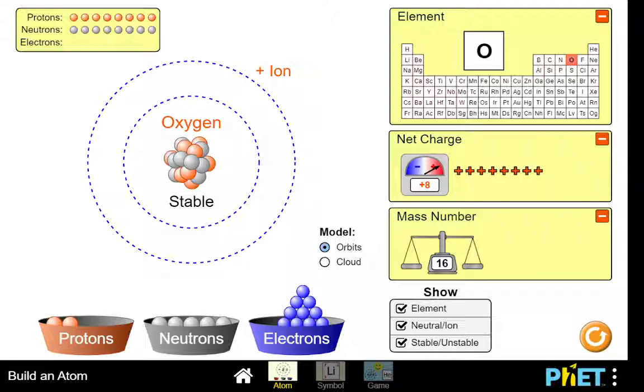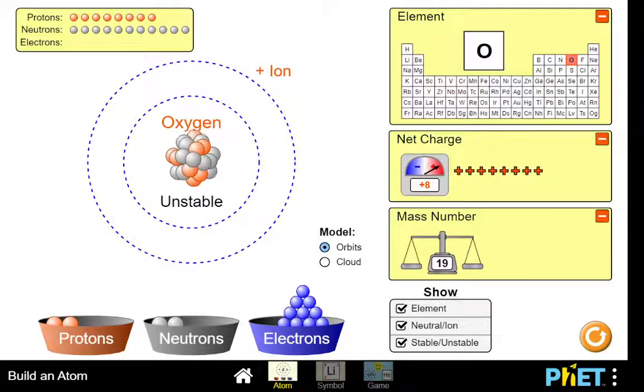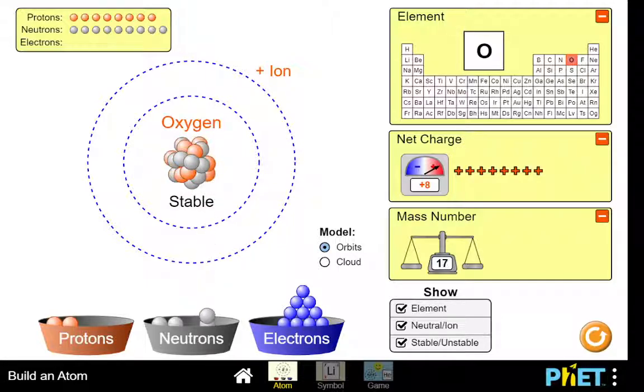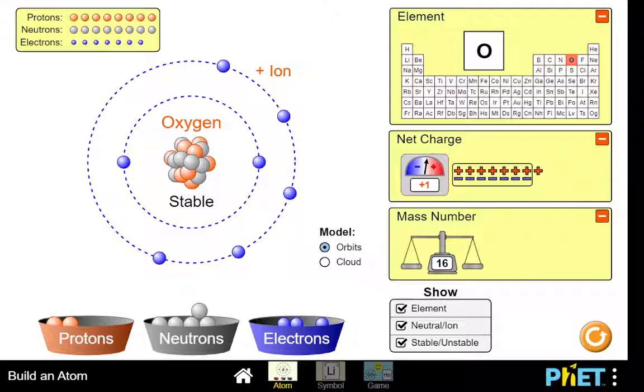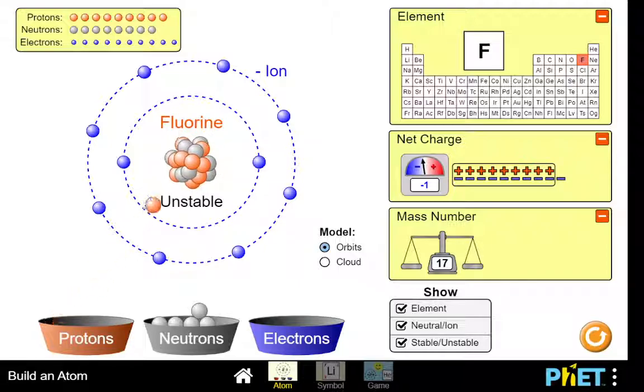You go into this original page, and you can just add protons, neutrons, and electrons to an atom. So it unfortunately only gives you a certain amount of protons, neutrons, and electrons you can add. So you can't make anything, any element past neon, because obviously the element depends on the amount of protons that you add.